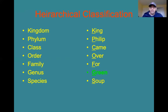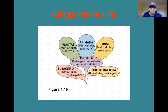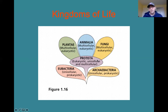Now, the kingdoms of life — there are six of them. There are two bacterial kingdoms: eubacteria and archaebacteria. Then there's a group of organisms that don't really fit into any of the other kingdoms — they have nuclei, so they're eukaryotes, but some are unicellular, some multicellular, some are more plant-like, some more animal-like, some more fungal-like, but they don't have all the characteristics to fall into one of those kingdoms. So Protista is kind of a catch-all kingdom, and it's kind of fallen apart — they are actually taking Protista and moving some groups out and classifying them differently.